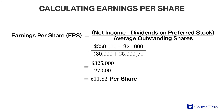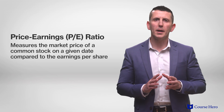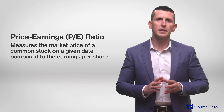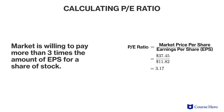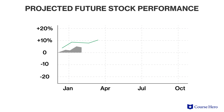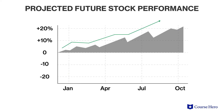Earnings per share leads to the price-earnings ratio, also known as the P/E ratio. The P/E ratio measures the market price of a common stock on a given date compared to the earnings per share. A higher P/E ratio is indicative of market confidence in that particular stock. The P/E ratio is computed by dividing the market price per share — assumed at $37.45 — by the earnings per share of $3.45 per share. A P/E ratio of 3.17 indicates that the market is willing to pay more than three times the earnings per share for that share of stock. The higher the P/E ratio, the more confident the market feels about the future performance of that stock.